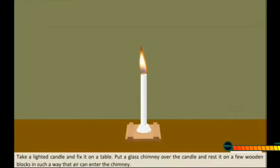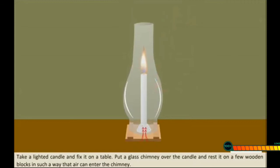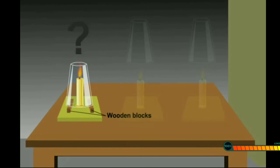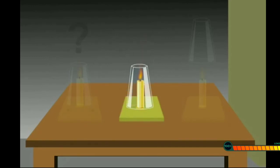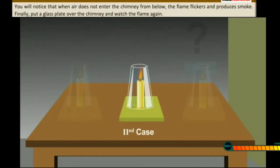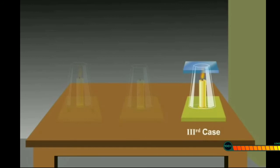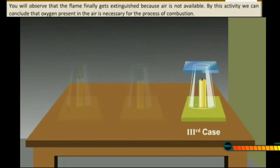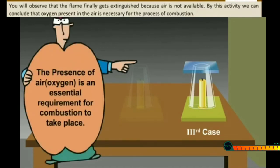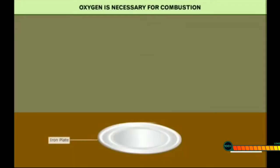Let us perform an activity to demonstrate the conditions required for combustion. Take a lighted candle and fix it on the table. Put a glass chimney over the candle and rest it on a few wooden blocks so that air can enter the chimney. Observe the flame — you will see the candle burns freely. Now remove the wooden blocks and let the chimney rest on the table. You will observe that when air does not enter from below, the flame flickers and produces smoke. Finally, put a glass plate over it — the flame gets extinguished because air is not available. We can conclude that oxygen present in the air is essential for combustion.